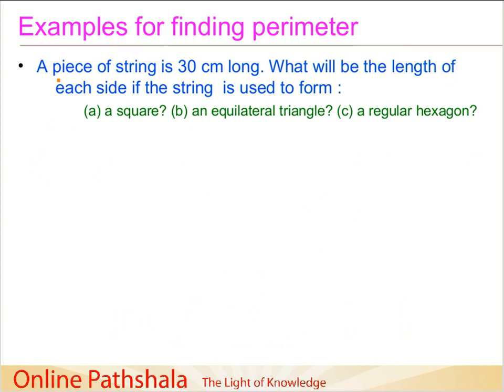It says that a piece of string is 30 cm long. Now we have a fixed length of the string and what we want to do is we want to construct different regular shapes or different shapes. And the problem says what is going to be the length of each side if the string is used to form a square, an equilateral triangle, and a regular hexagon.